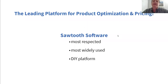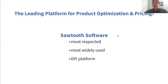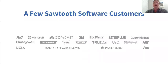Thank you, Rita. I'm going to give a brief introduction to Sawtooth Software and also a little about conjoint analysis and MaxDiff. Sawtooth Software is the leading platform for product optimization and pricing. We've been around the longest — we were the first movers, getting into this space starting in the 1980s. We are the most respected provider in the industry for software, conference, and training on conjoint analysis and related marketing science topics, and the most widely used platform for both MaxDiff and conjoint analysis.